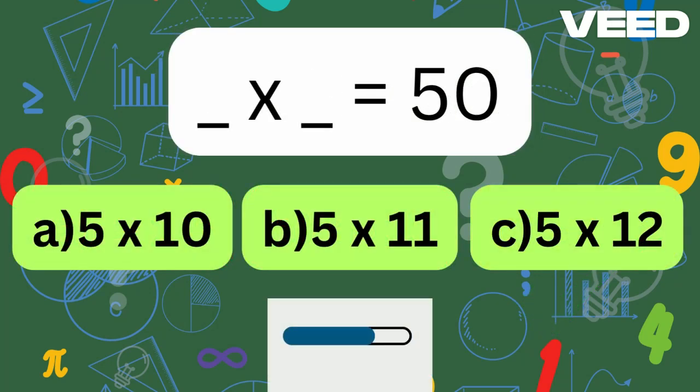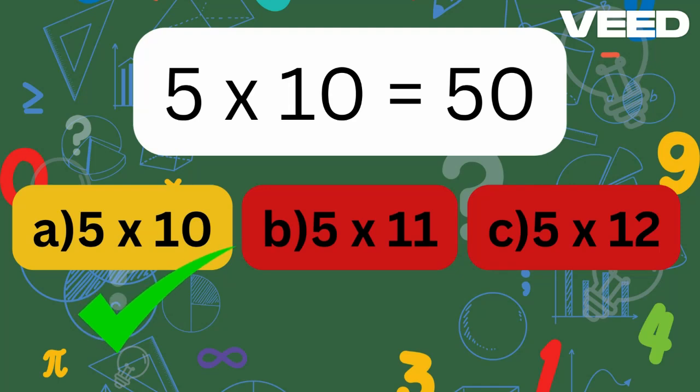What times what is 50? That's right, 5 times 5 times 10 is equal to 50.